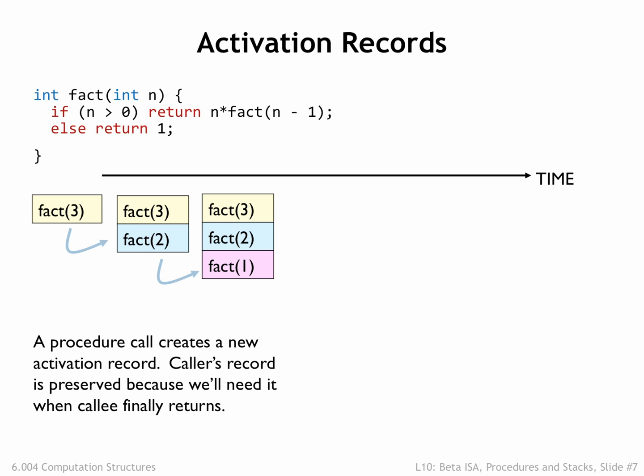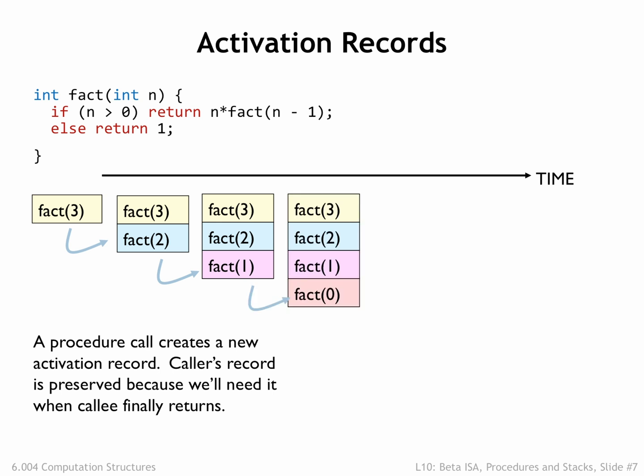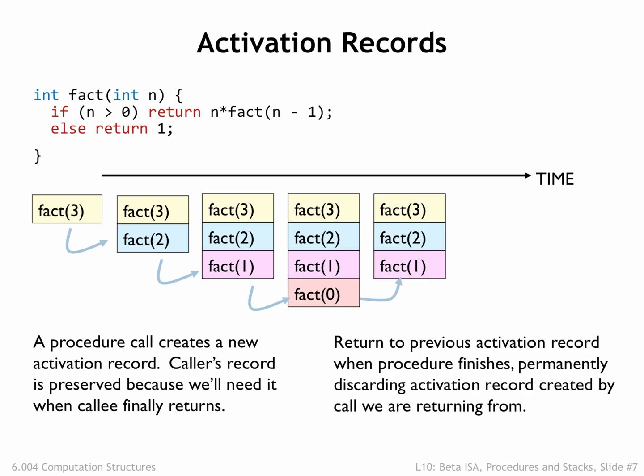Fact(2) requires computing fact(1), which in turn requires computing fact(0). At this point there are four active procedure calls and hence four activation records. The recursion terminates with fact(0), which returns the value 1 to its caller. At this point we've finished execution of fact(0) and so its activation record is no longer needed and can be discarded. Fact(1) now finishes its computation, returning 1 to its caller — we no longer need its activation record. Then fact(2) completes, returning 2 to its caller and its activation record can be discarded. Note that the activation record of a nested procedure call is always discarded before the activation record of the caller. The execution of the caller can't complete until the nested procedure call returns.